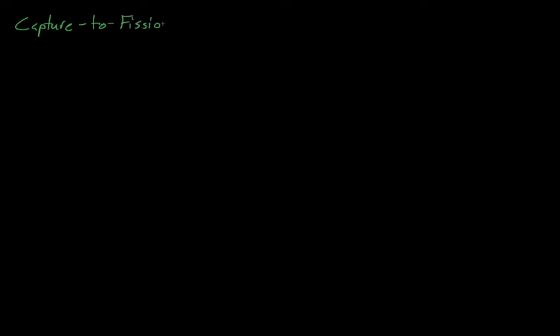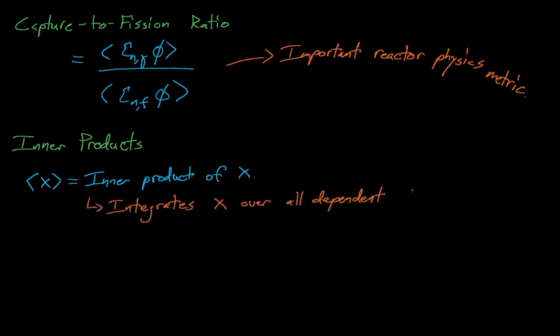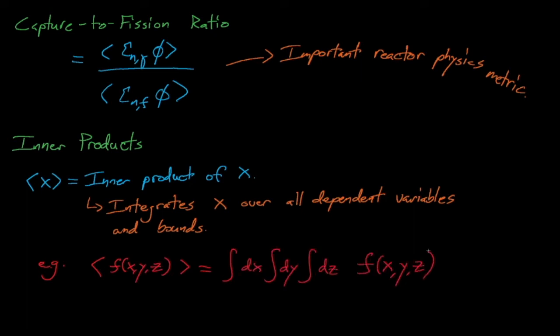The last fission-related metric I'll discuss today is the capture-to-fission ratio, which is the ratio between the rates of neutron capture and neutron-induced fission in a reactor. The brackets here in the capture-to-fission ratio definition are known as the inner product operators. The inner product of some function simply integrates that function over all of its dependent variables and over all possible bounds. For example, the inner product of f of x, y, and z will integrate our function over all of x, y, and z. Thus, the inner product essentially sums up some quantity over every variable in the entire system.